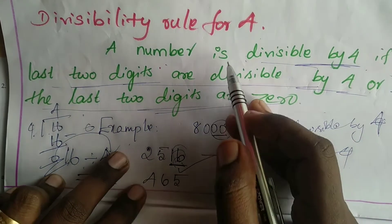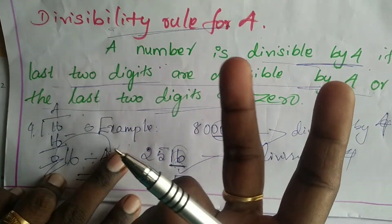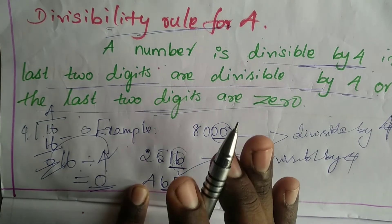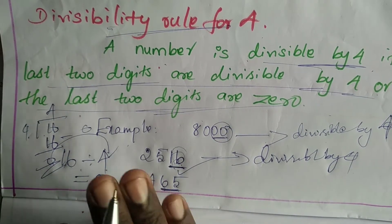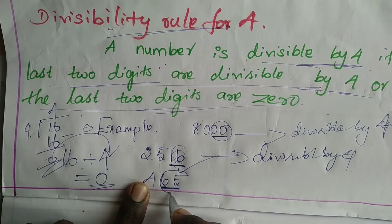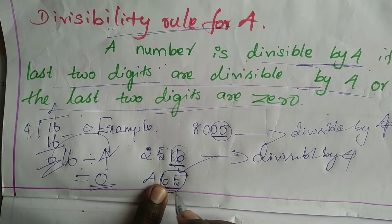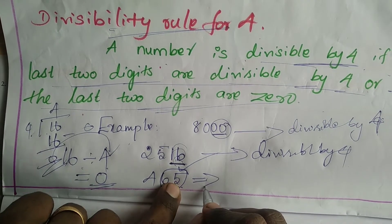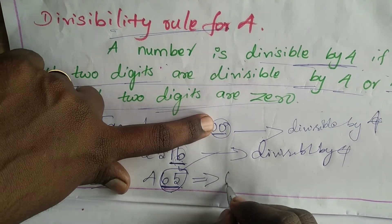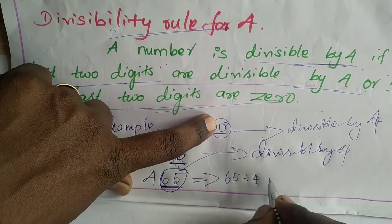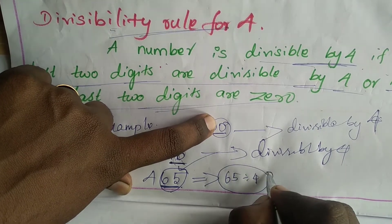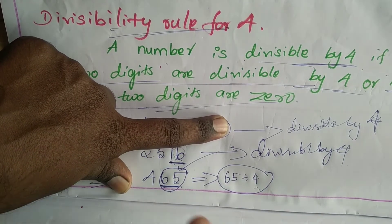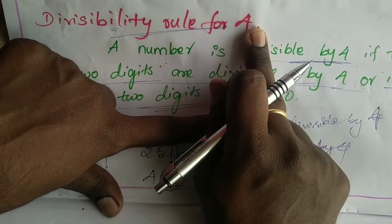For checking the divisibility rule for 4, there are two conditions: either the last two digits are 0, or we divide the last two digits by 4 and check for remainder. Here, the last two digits of 465 are 65, which are not 0, so let's check whether 65 is divisible by 4.